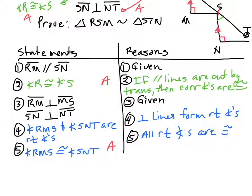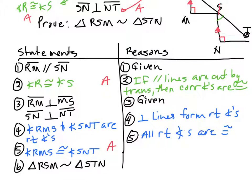As soon as I get AA I can state my proof conclusion: triangle RSM is similar to triangle STN by AA similarity. Not so bad. These proofs use the same progressions as before — you might want to review your flashcards with those proof progressions.